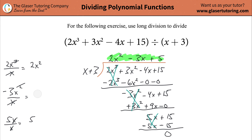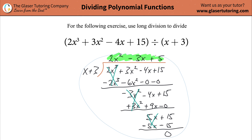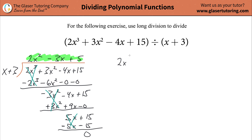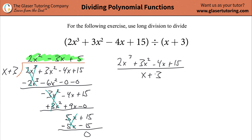But you should always check your work. What I would suggest is doing a very quick check. Think about what we did: we took 2x cubed plus 3x squared minus 4x plus 15, divided by x plus 3. In other words, you took your dividend, divided it by your divisor, and that should equal your quotient.